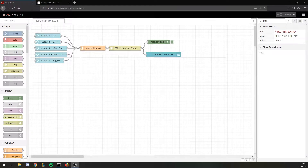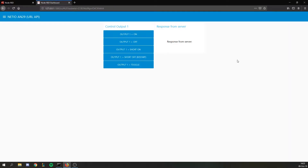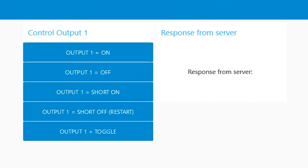The whole flow, node by node, is described in detail in AN29. And this is my dashboard. As you can see, it's combined from 5 buttons — each sends different URL API requests in order to control your NetIO smart power socket — and a text node, which displays responses from your device to URL API requests.